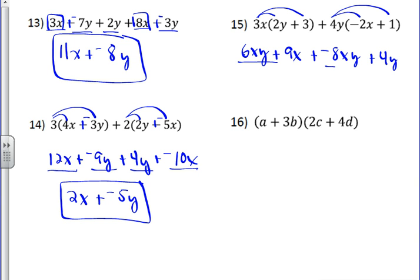The only like terms on this problem are the xy's, and so you end up with negative 2xy, because 6 plus negative 8 is negative 2. And then the 9x and the 4y parts, you just write down as they are, because they're not like terms.